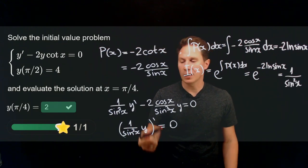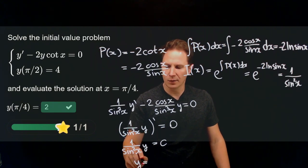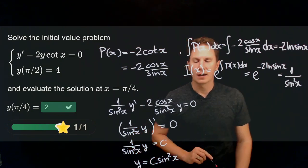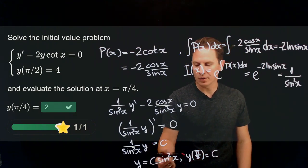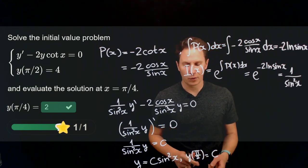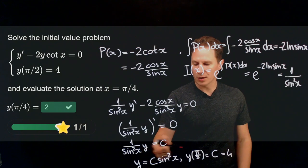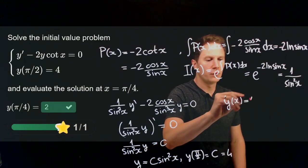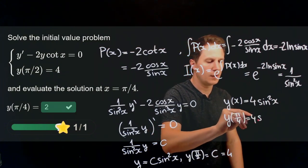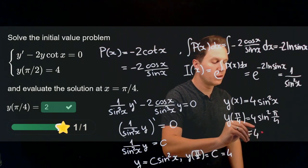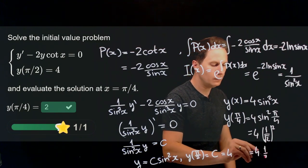The left-hand side is the derivative of 1 over sine squared of x times y, so that expression equals a constant c. Therefore y equals c times sine squared of x. Applying the initial condition at x equals π over 2: c times sine squared of π over 2 equals c times 1, which must equal 4, so c equals 4. The solution is y of x equals 4 times sine squared of x. Evaluating at x equals π over 4 gives 4 times (1 over root 2) squared, which is 4 times one half, or 2.